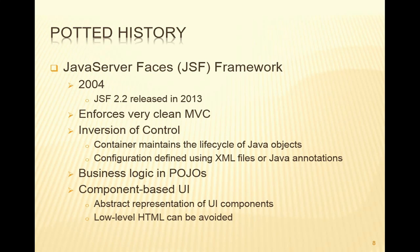So when, in the following year, the Java Server Faces framework was introduced, what it did was, in many ways, bring together all those positive points from its predecessors. The latest release of JSF was version 2.2, released in 2013, and that's what we'll be using on this module. Again, it enforces very clean MVC. It also has inversion of control, in which the container maintains the lifecycle of its Java objects. We can use either an XML file or annotations for configuration, and as we'll see, we'll actually make use of both concepts.